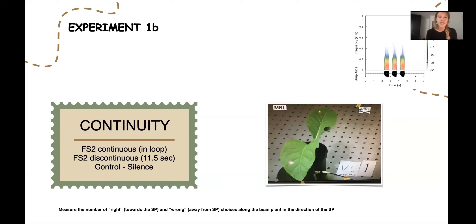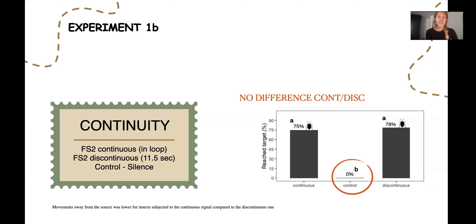Secondly, we tested the continuity of playback. In this test, we aimed to assess whether the interruption of FS2 was affecting the motivation in males to express searching behavior and reach the target. The FS2 was either played back in loop, which we call continuous, or with a silent break of 11 seconds between consecutive signals, which we call discontinuous. For this specific trial, we also measured the numbers of right and wrong steps and movements in the direction of the shaker or the opposite direction of the shaker.